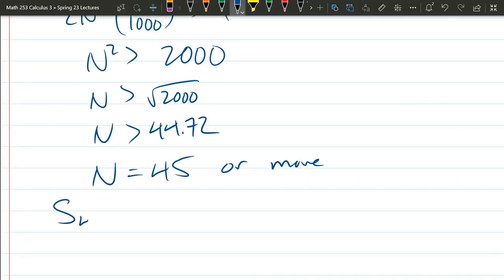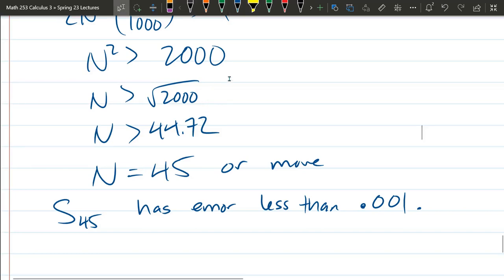So this means the partial sum of 45 terms has error less than 0.001. So 45 would be how big n, or more, is how big n has to be. The reason you can go more is because you could add the first 100 terms, and you'll have a smaller error than if you stopped at 45. But you only need to go to 45 to ensure that your error is that small.